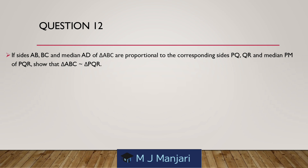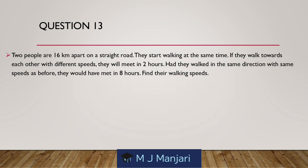Question 12. If sides AB, BC and median AD of a triangle ABC are proportional to the corresponding sides PQ, QR and median PM of triangle PQR, show that triangle ABC is similar to triangle PQR.